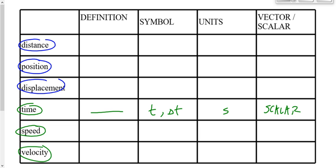Speed we define as how fast something moves. The symbol for speed is a lowercase v. There is a capital V in another physics quantity — voltage or potential difference — but we don't use that in Physics 20. Small v is the only v we deal with in Physics 20, and it represents speed. The units for speed are typically meters per second, and speed is a scalar.